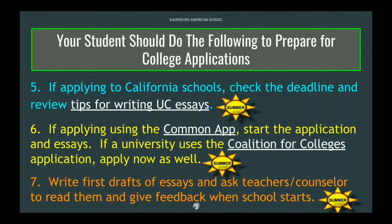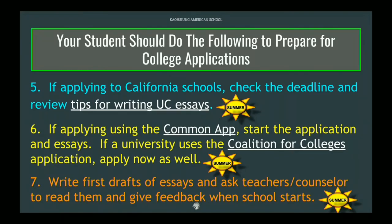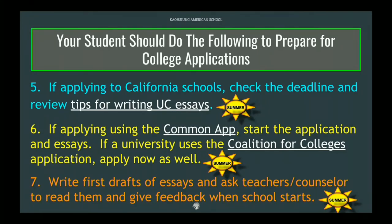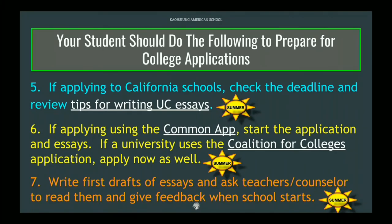Some universities go through Coalition for Colleges — it's like Common App but different. Some colleges use this format, so students may need to look at UCs, Common App, Coalition, and some direct campus applications. This year some students had four or five different formats to contend with for applications, so it's something to be aware of early on so you can be working on that.